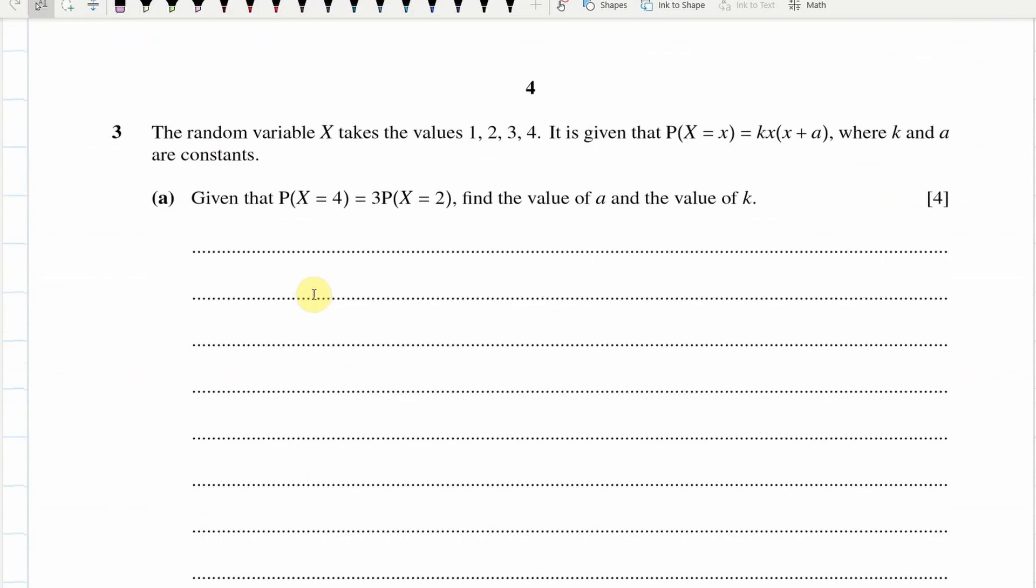Random variable x takes the values 1, 2, 3, 4. It's given that P(x) equals k(x + a), where k and a are constants, and we know that P(x equals 4) is equal to 3 times the probability that x equals 2. So probably what I'm just going to do is write out my table. So I've got my possible values, and then the probability that x equals a particular value. So we're going to use this here. So if x is 1, we'd get k(1 + a). And then if x is 2, that's 2k(2 + a). And then the next one would be 3k(3 + a). And finally, this will be 4k(4 + a).